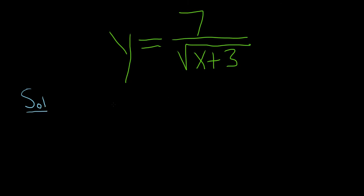Before we do that, we should rewrite the bottom piece as follows. So y is equal to 7 over, and whenever we have a square root, we can write it as something to the 1 half power. So this is actually x plus 3 to the 1 half.